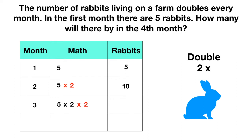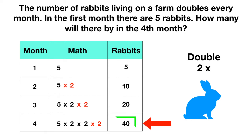Five times two times two gives us twenty. In the fourth month, it doubles again. So we take our same math and multiply it by two one more time. When you solve this out, you get forty. So in the fourth month, there will be forty rabbits.